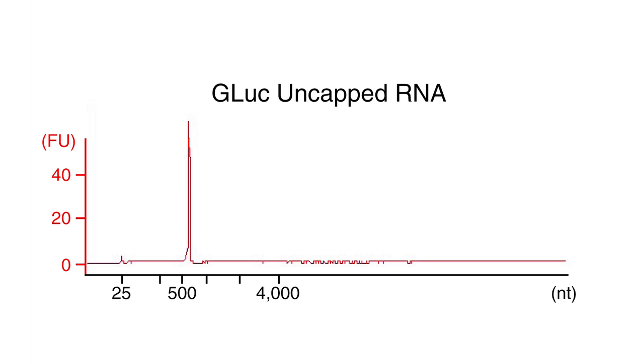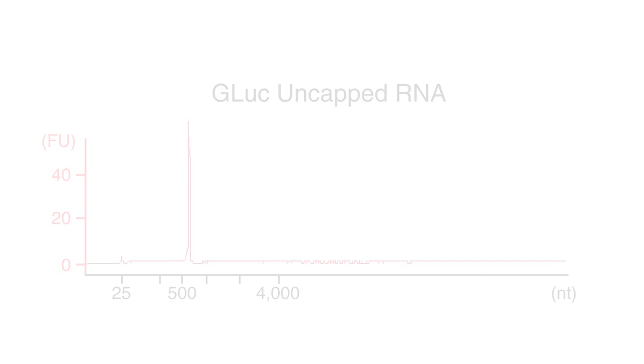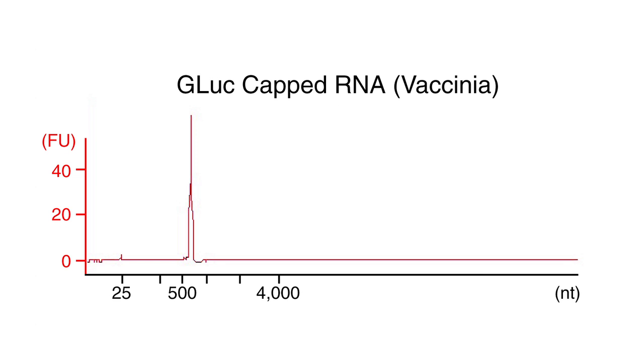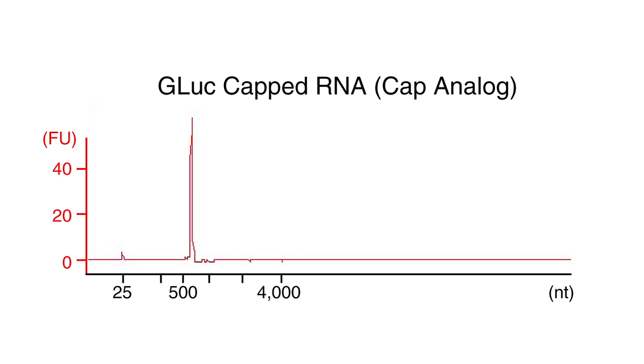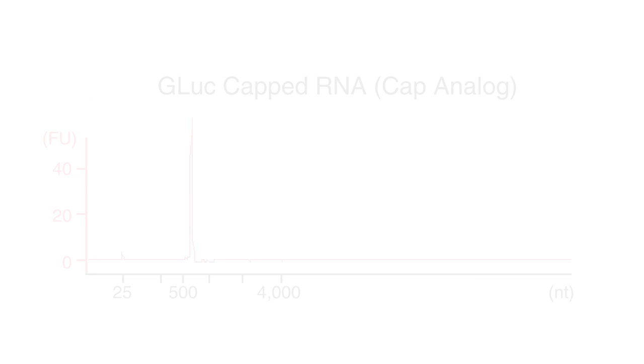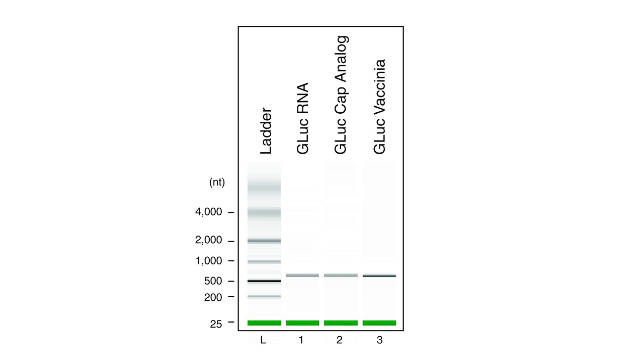The T7 high-yield RNA synthesis kit can produce up to 180 micrograms uncapped RNA and 40 to 50 micrograms of capped RNA per 20 microliter reaction. When analyzed on the Agilent 2100 bioanalyzer, good quality intact RNA should show a single sharp peak representing the RNA transcript. A broad peak or multiple peaks indicate RNA degradation. It is also important to verify the size of the RNA. RNA transcripts of a longer length than expected may be due to incomplete digestion of the template plasmid DNA. RNA degradation and lower yield are usually the result of contaminants introduced into the reaction from the template DNA.